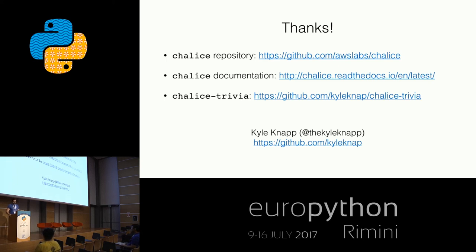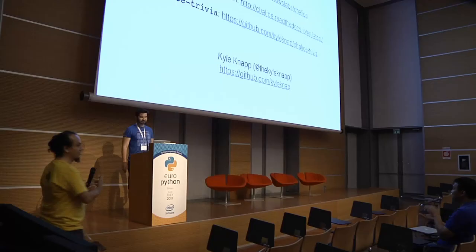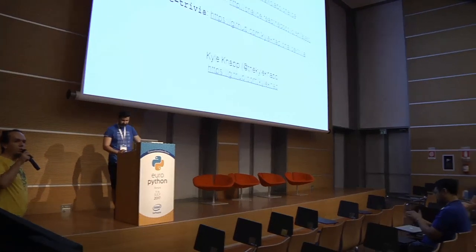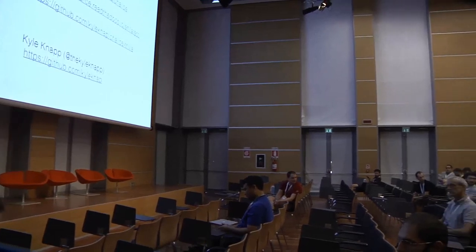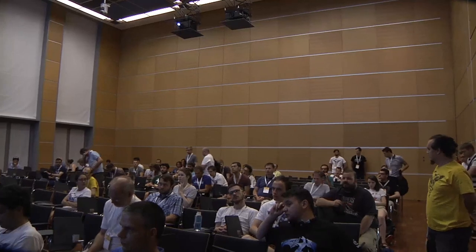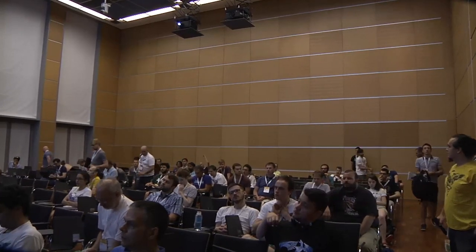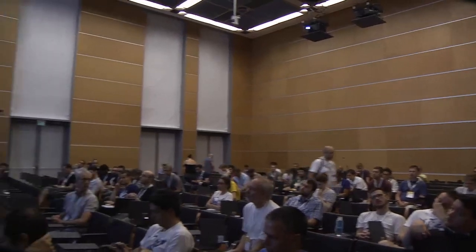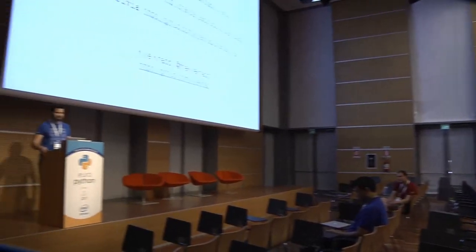Q&A: Does Chalice provide any way to manage resources like S3 buckets or databases? Not currently — the closest is CloudFormation templates. Adding management of major resources like S3 and DynamoDB is on the roadmap.